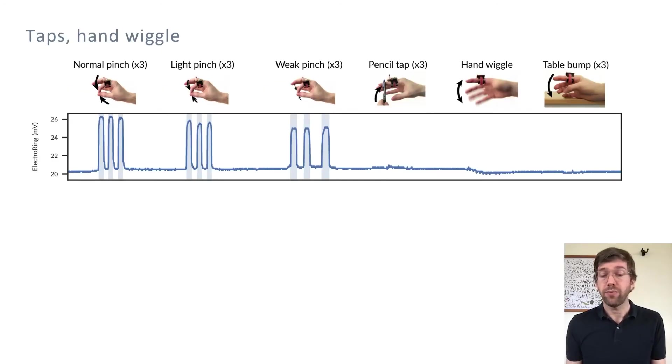This figure shows ElectroRing's robustness to varying touch strength and its robustness to hand motion that is unrelated to touch. The blue graph shows the touch sensor output over time as the user performs six actions. The first three actions are pinches with decreasing strength. You can clearly see the touch signal even for the weakest third pinch, where the user's fingers are touching ever so slightly.